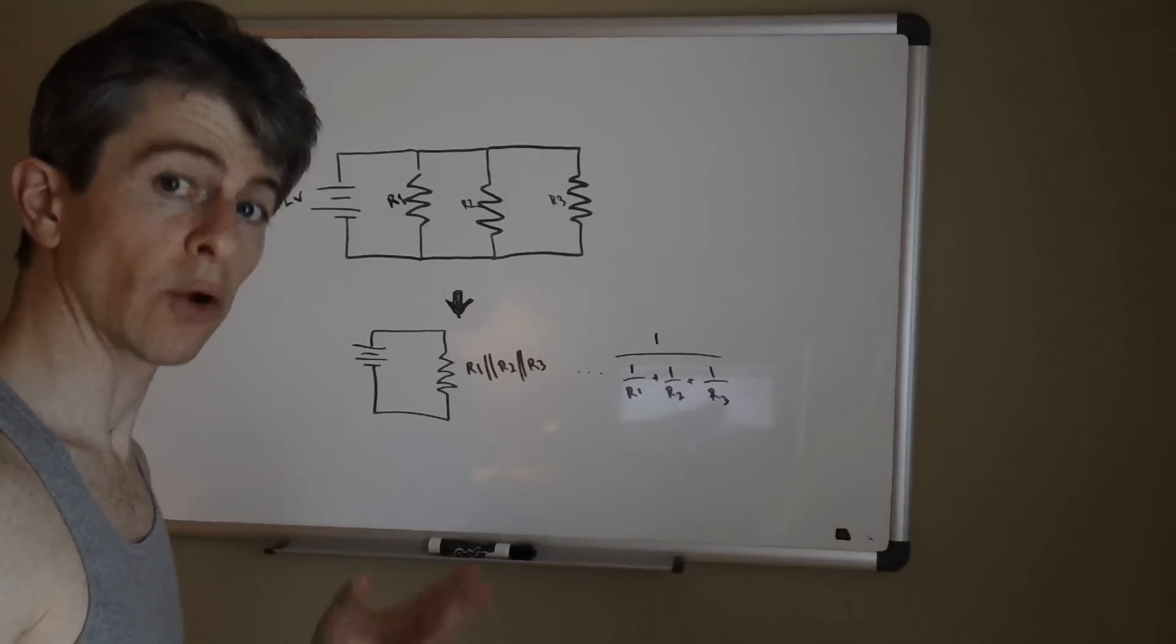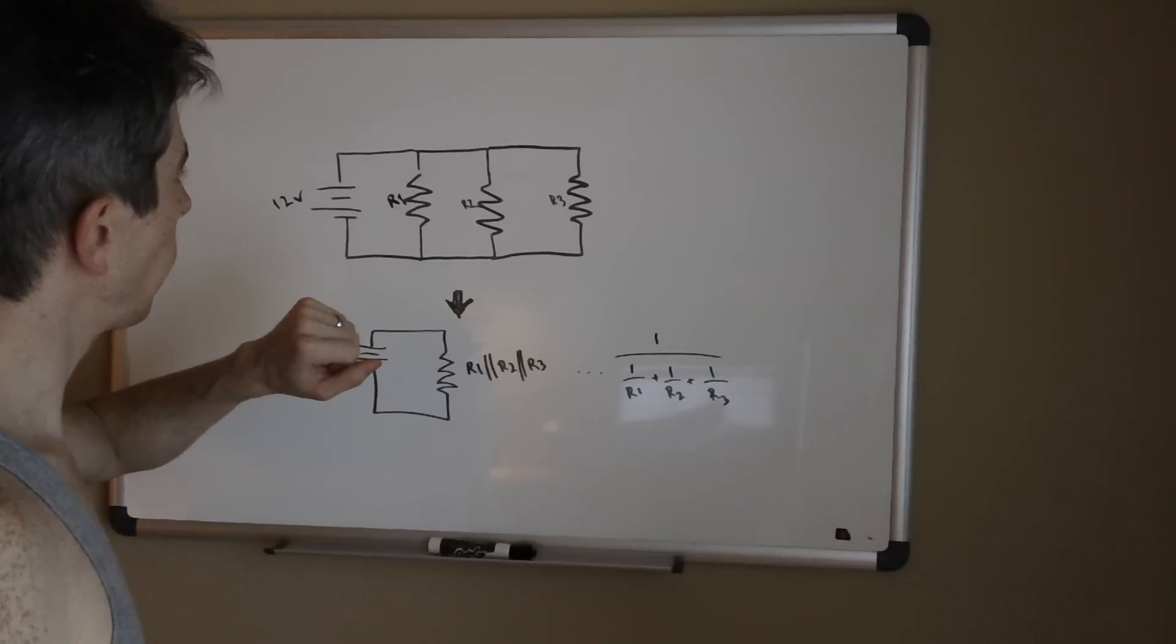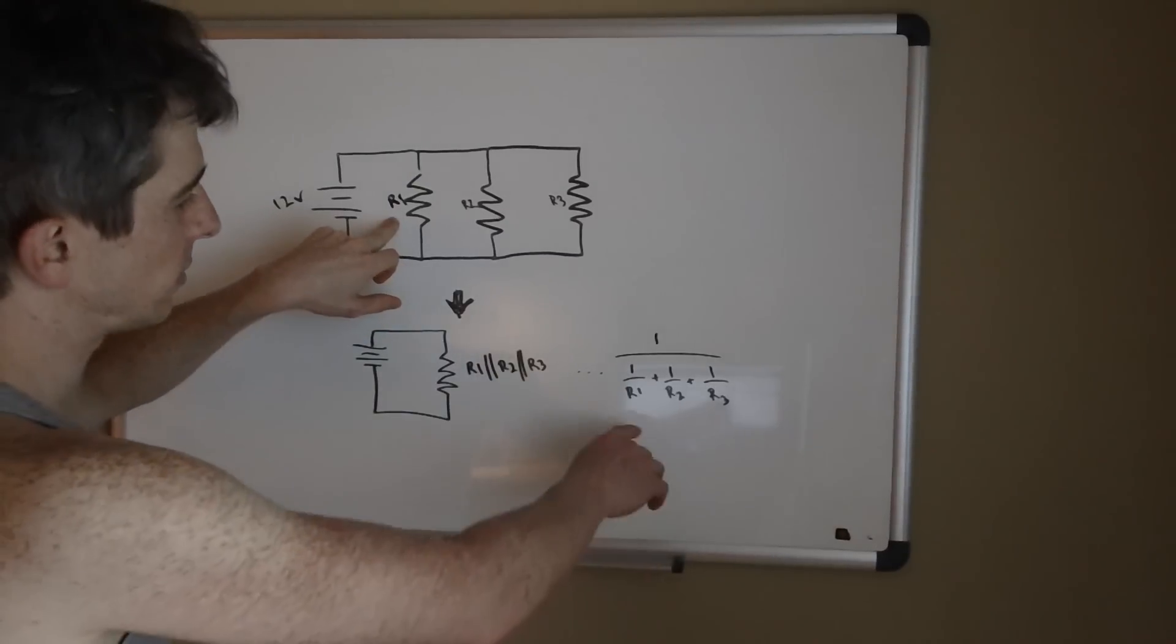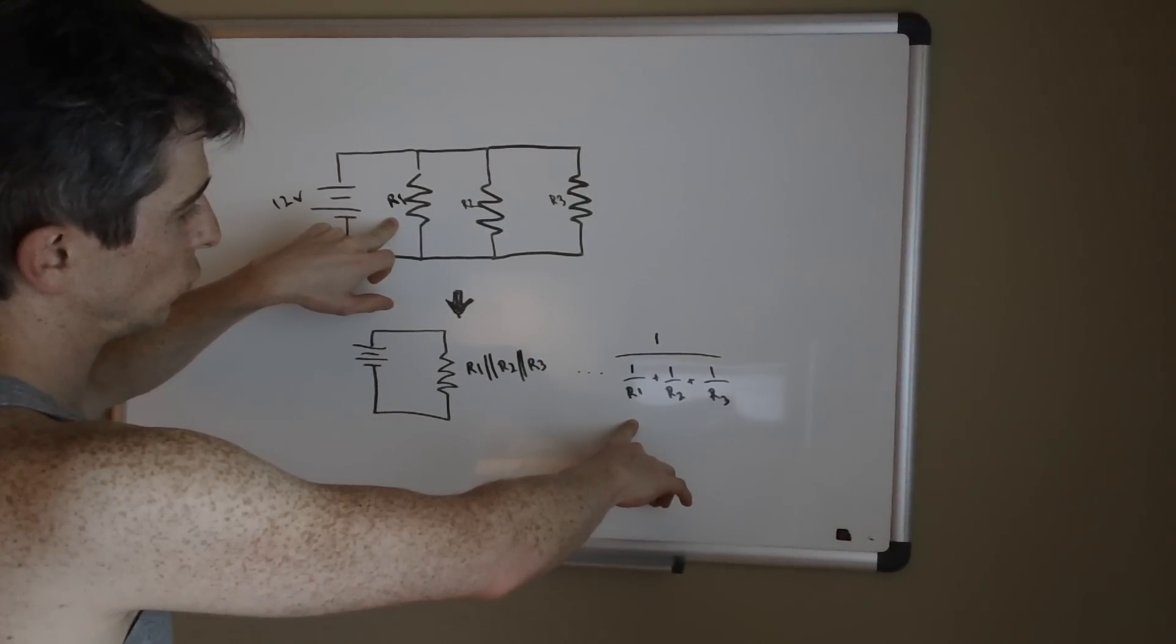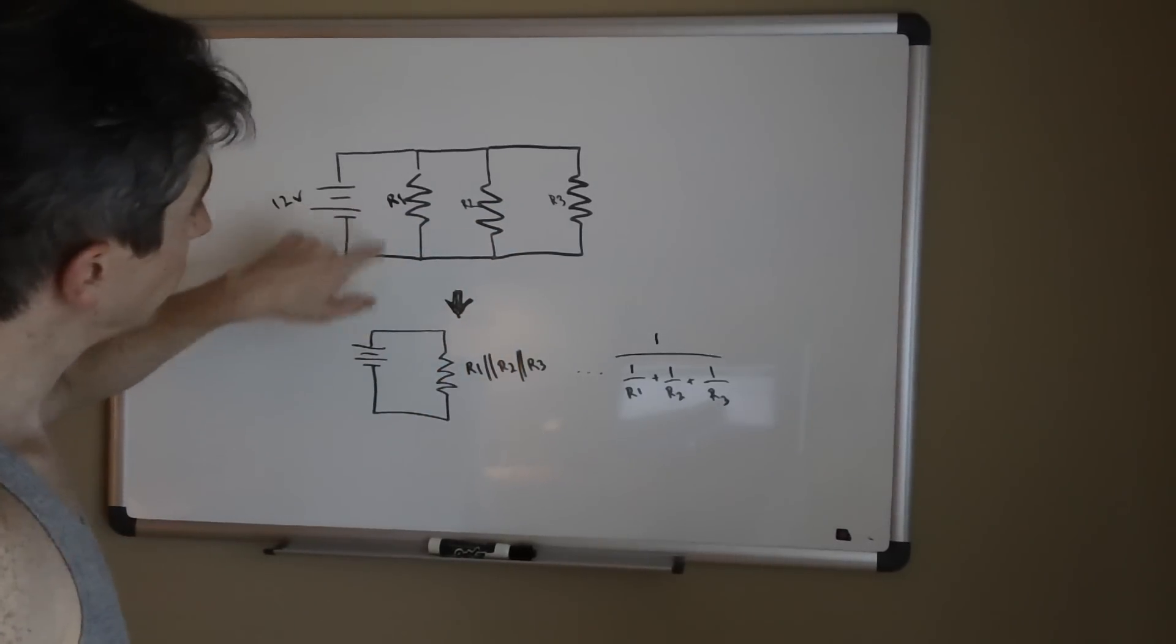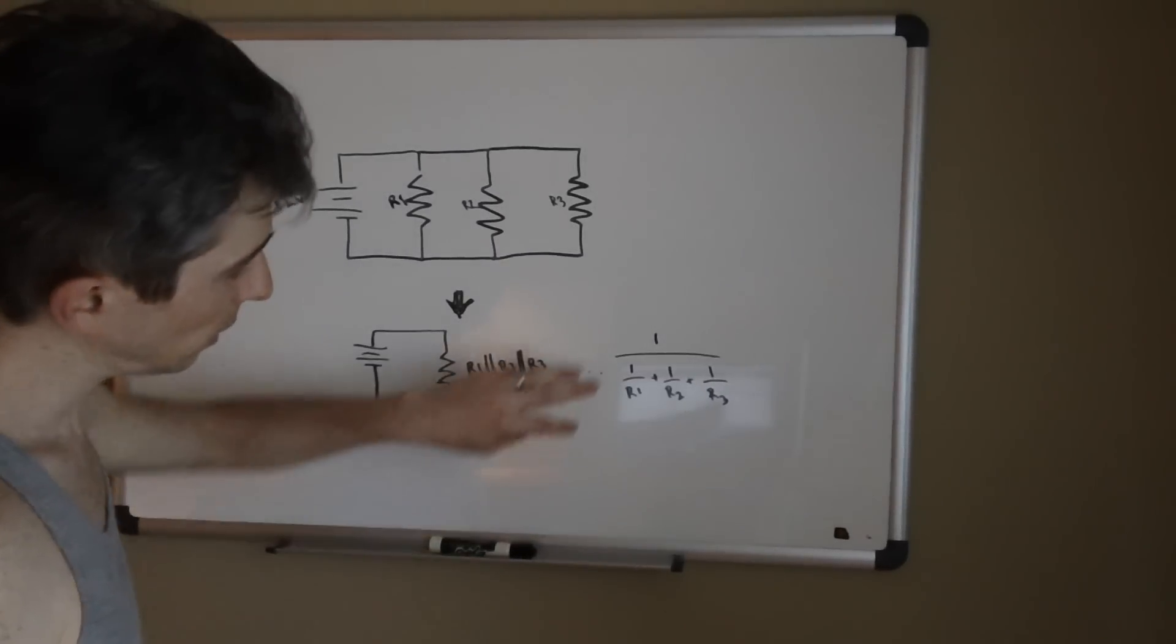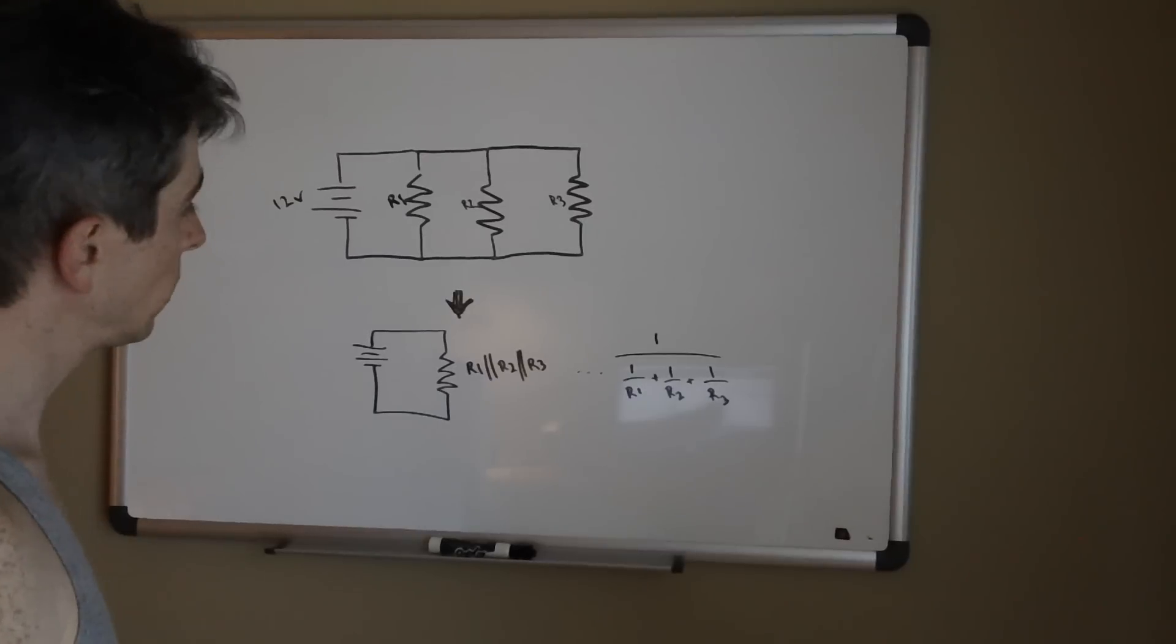Let's take a simple example where all three resistors are equivalent. Let's say each one of these is 12 ohms, that way this math works out easy. If these were all 12 ohms using this formula you have 1/12 + 1/12 + 1/12, which is 3/12, and then you're basically inverting that so it'd be 12 over 3, which is 4.